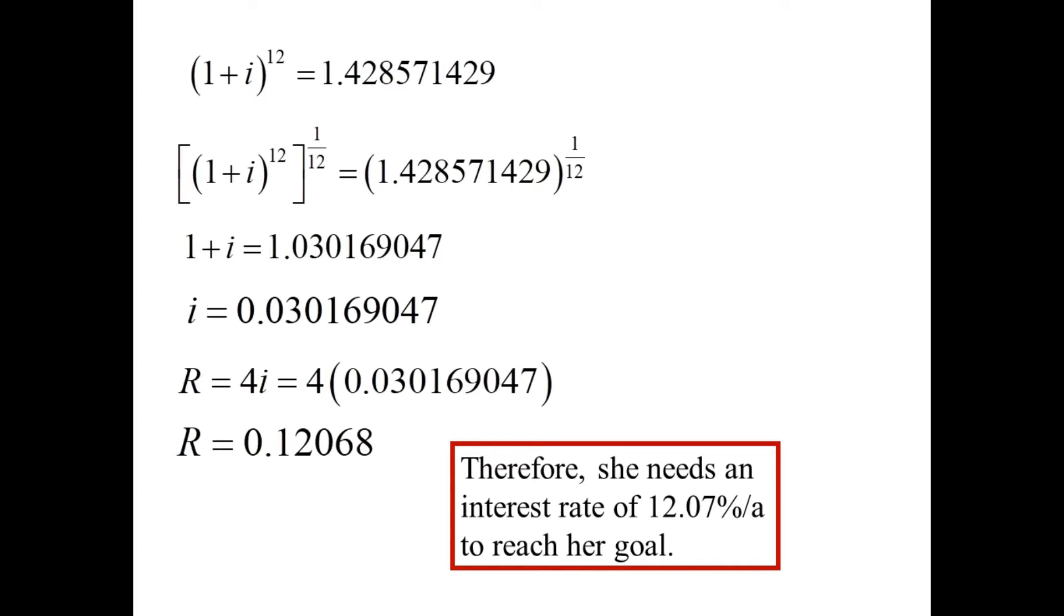Will she find this? No, she's not going to find that. It's not likely that she'll be able to find an institution that pays 12% per year to reach her goal. So what she's asking of her money here isn't reasonable. She can't expect to reach her goal.